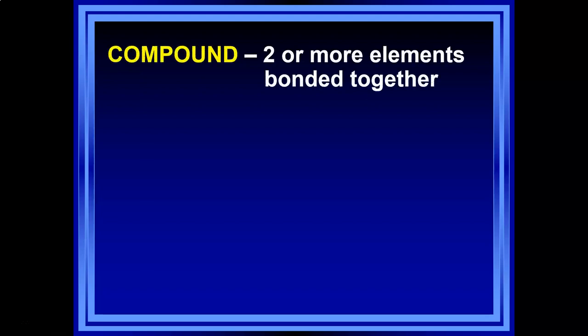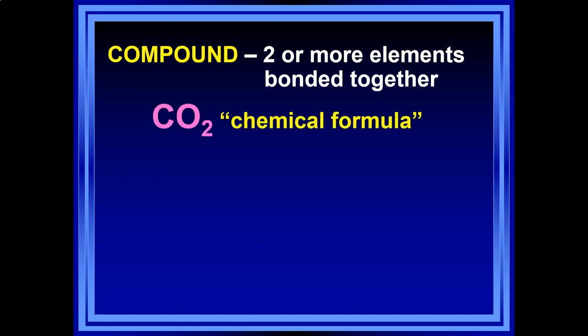Elements is a wonderful chemical term, as is compound. A compound to a chemist is two or more elements bonded together. Bonded means they're in a particular relationship — different types of bonds for different types of relationships. For example, CO2, carbon dioxide: two oxygens are bonded to one carbon. CO2 is the chemical formula for carbon dioxide — it's shorthand indicating two oxygen atoms bonded to one carbon.